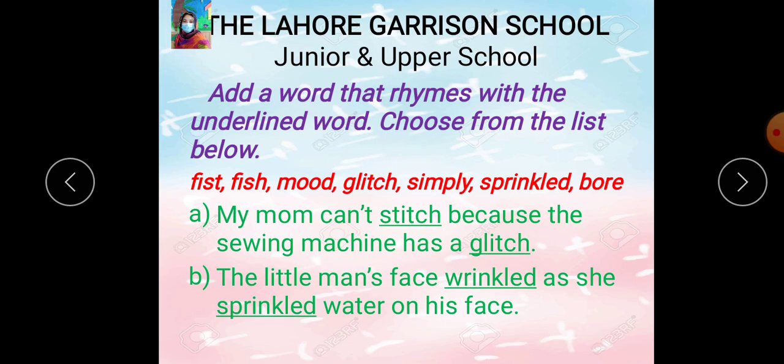Now the question is: add a word that rhymes with the underlined word. Choose from the list below. Dear students, you have to choose a rhyming word with the underlined word from the list. Niche jo red color se words likhe huye hain, un mein se aap ne ek word select karna hai jo rhyming word hoga, niche die gae sentences mein jo underlined words hain unka.